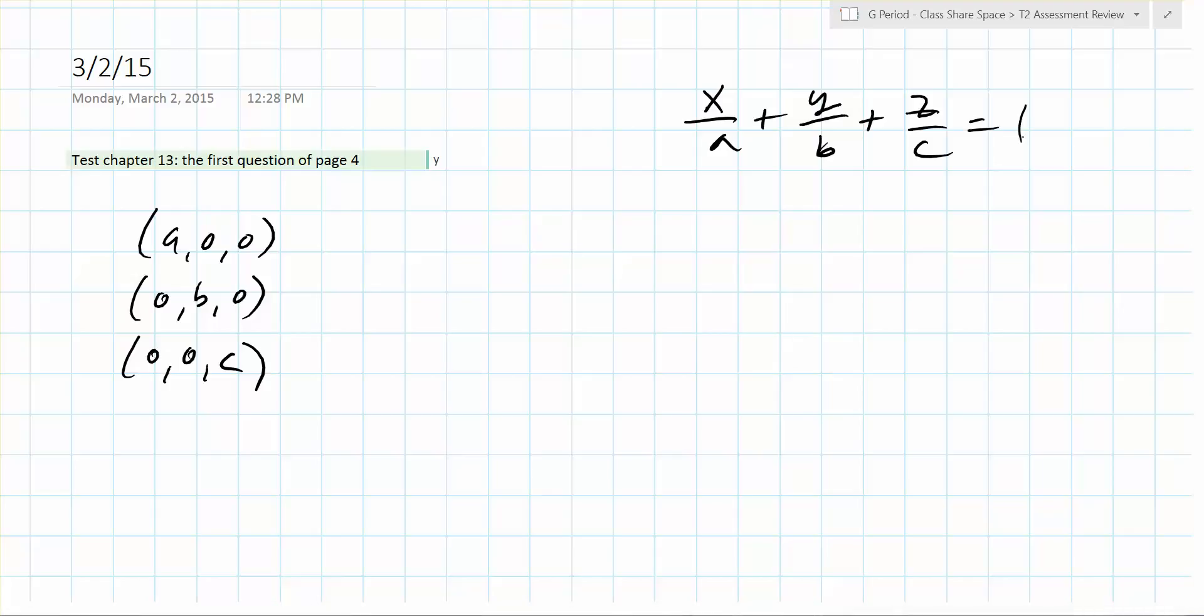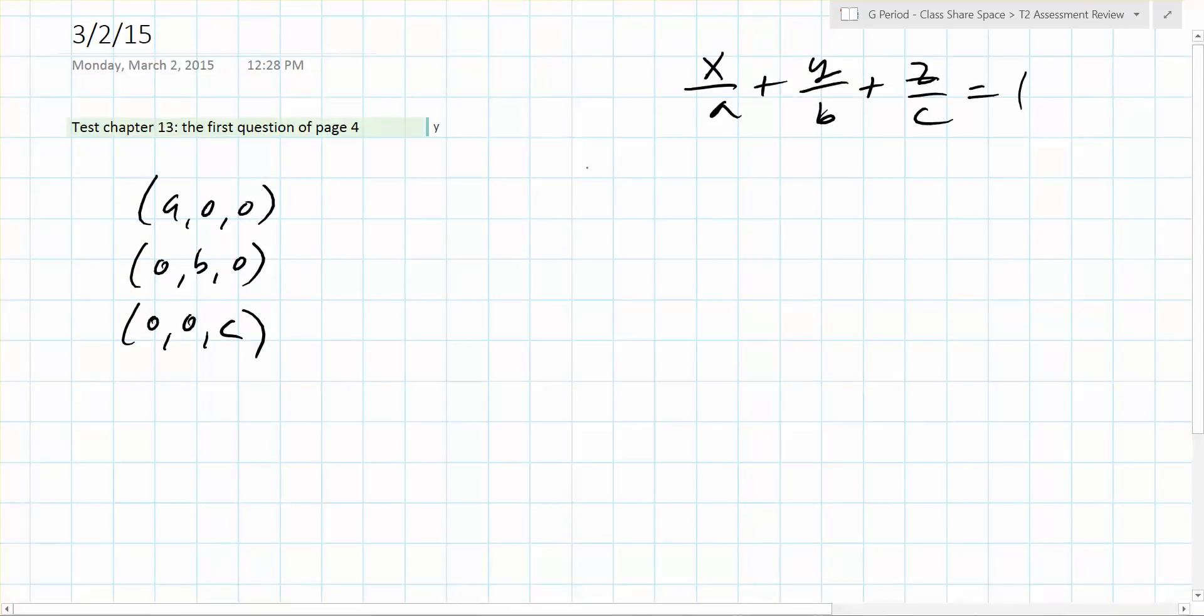You need two things. What are those two things? Normal and a point. It would be great if you had a normal and a point. Any point you want. Exactly. Normal and a point.